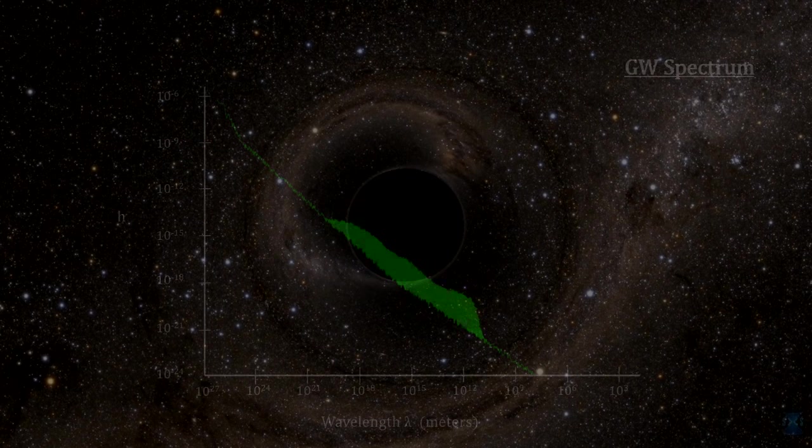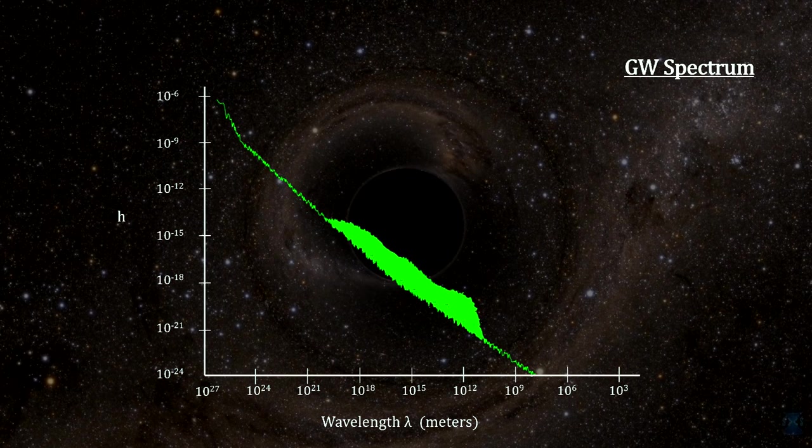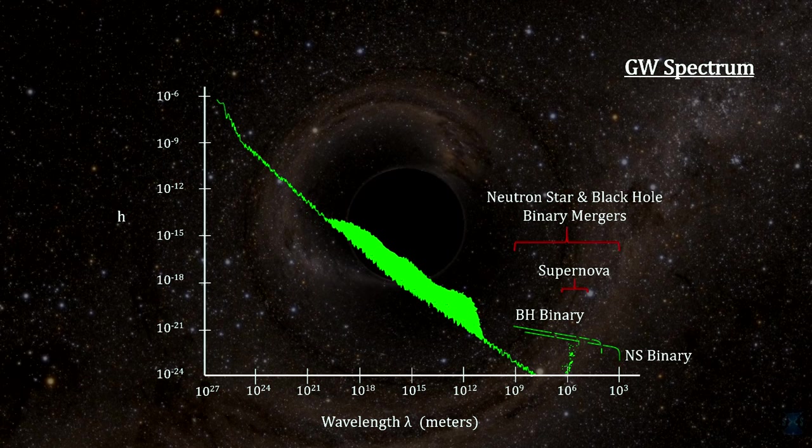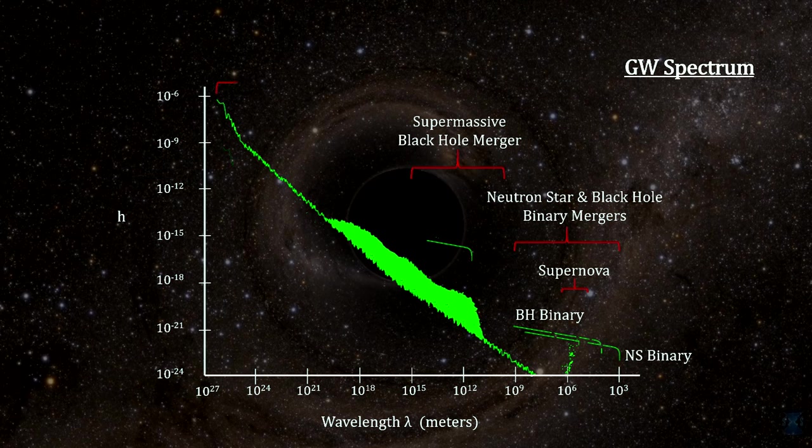A number of other major cosmological events can also create gravitational waves. Here is a chart of some of the events and their expected wavelengths and amplitudes. Supernova, binary mergers like the ones we've been analyzing, supermassive black hole mergers, and remnants from the Big Bang.